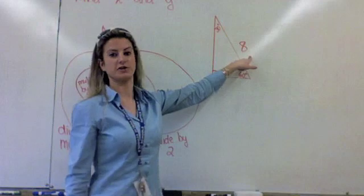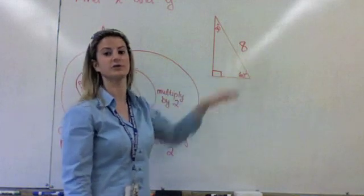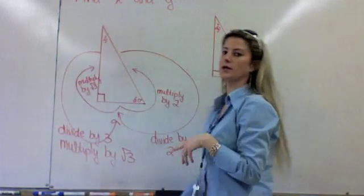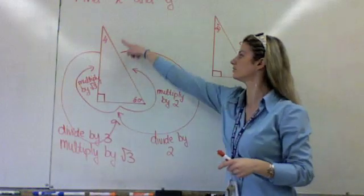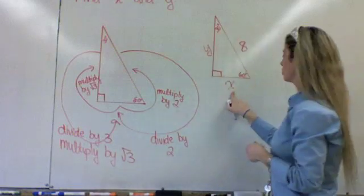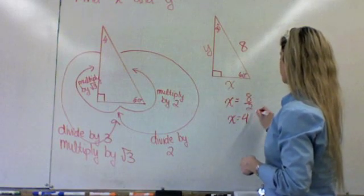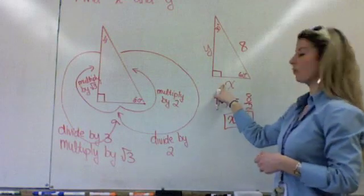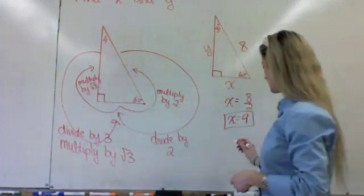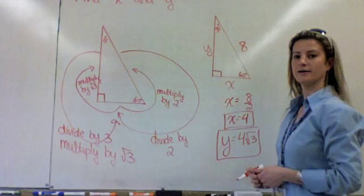Now let's say we know the hypotenuse and we need to find the short leg and the long leg — that's the second possibility. We always want to go to the short leg first. Hypotenuse to short leg: divide by 2. So if the hypotenuse is 8, x equals 8 divided by 2, so x equals 4. Then to get y, we know the short leg is 4 — short leg to long leg is multiply by root 3, so y equals 4 root 3.